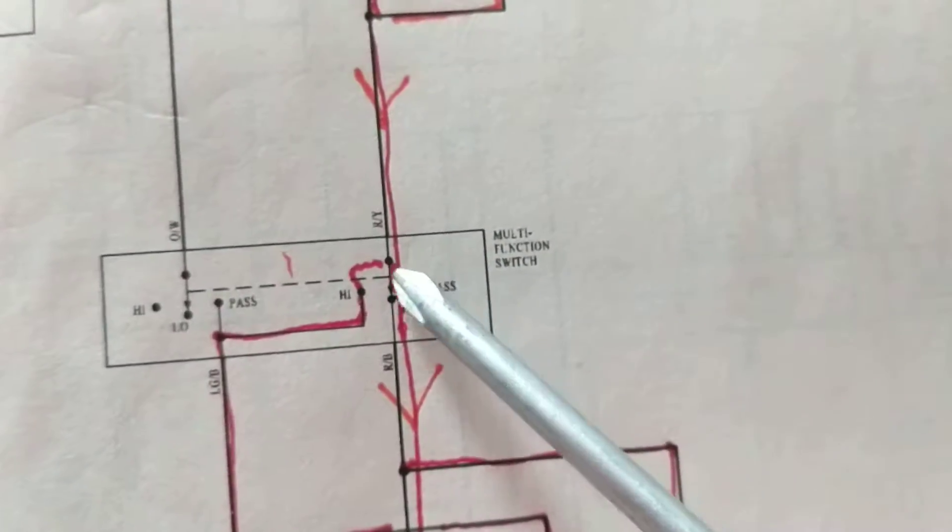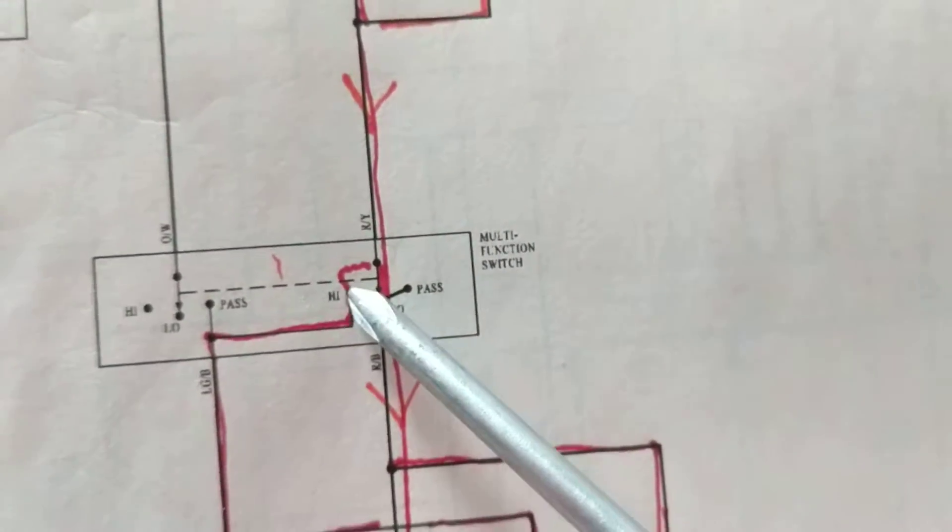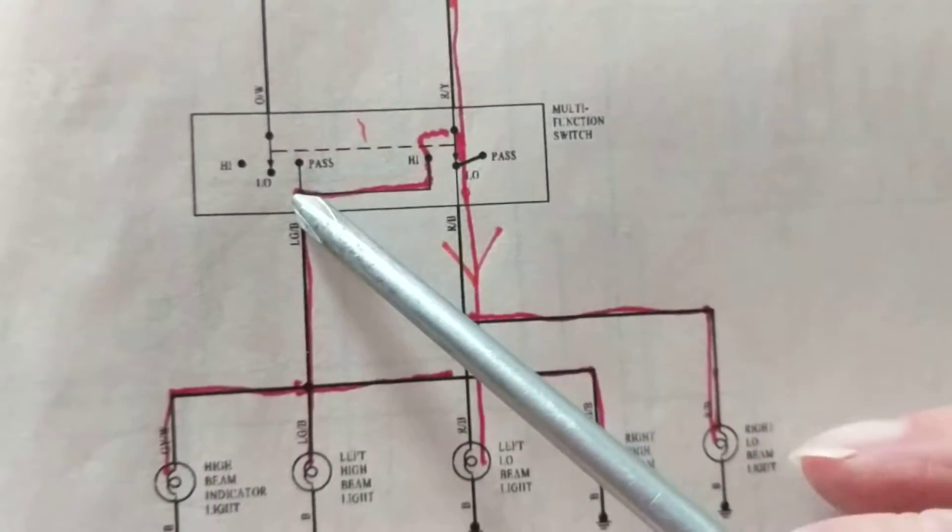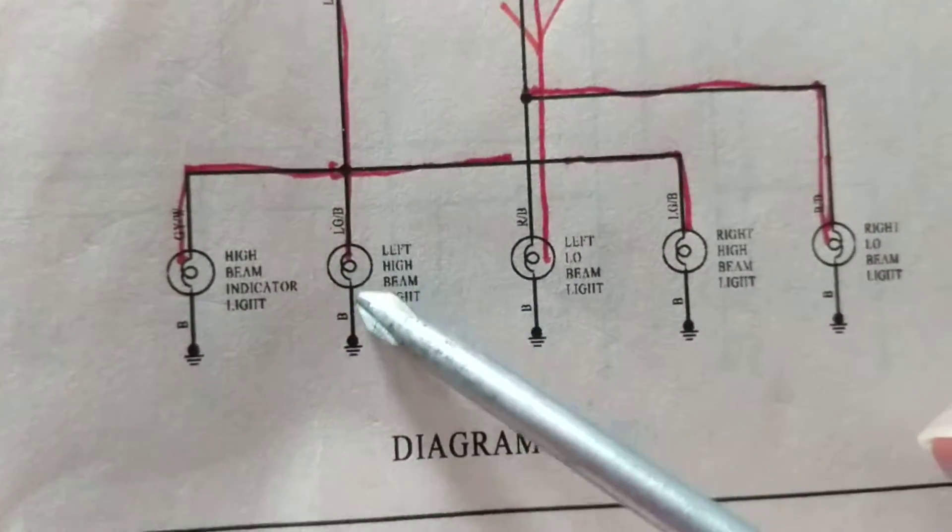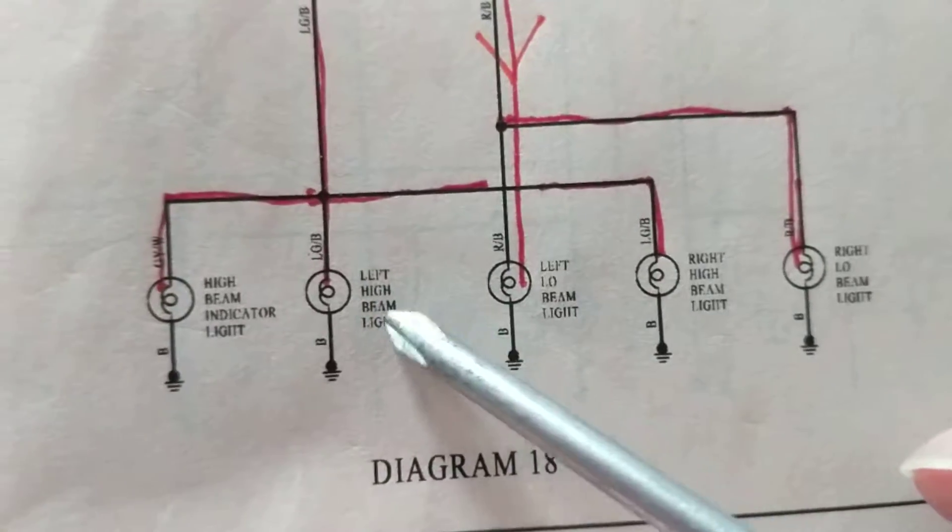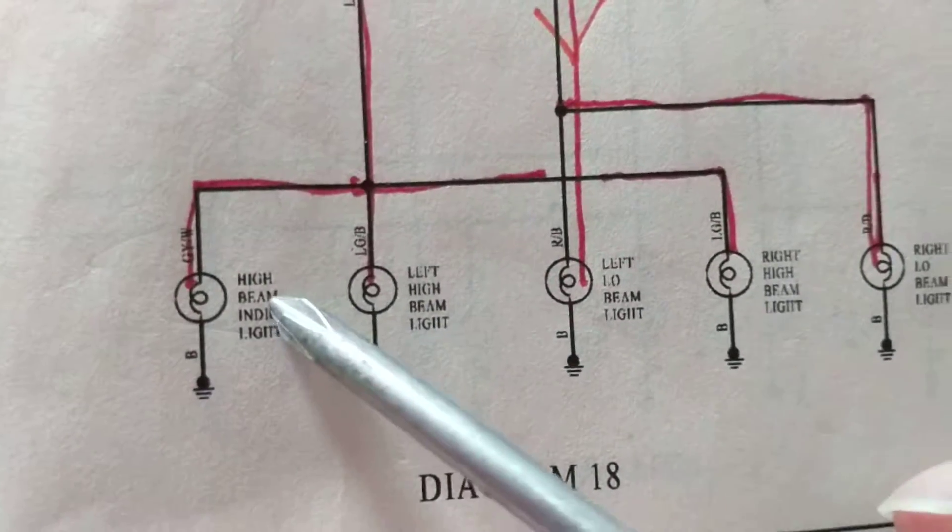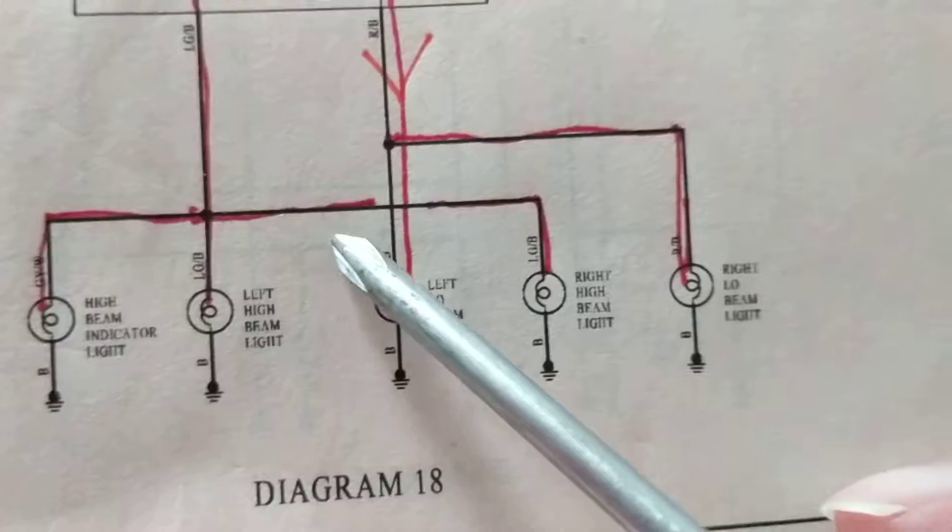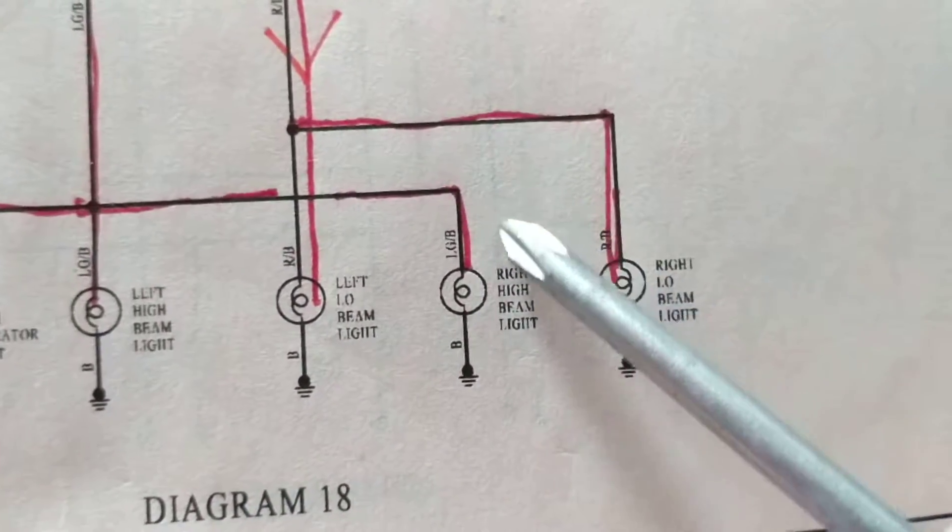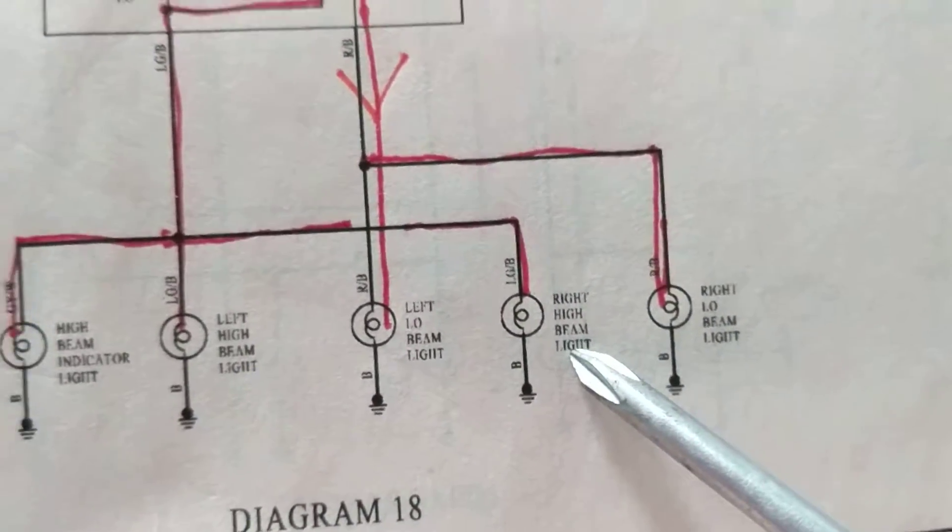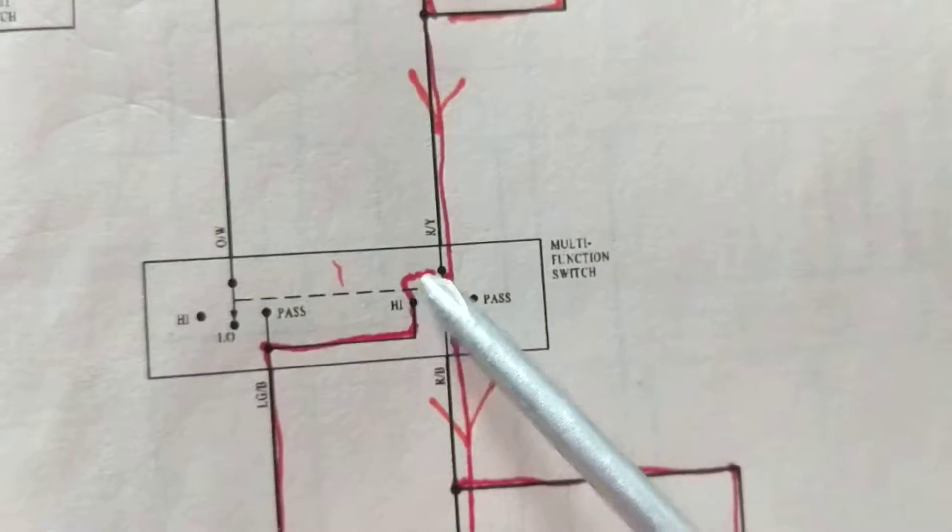And the same if we have this in a high position, multi-function switch, we will go here. These will be activated: left high beam switch, high beam indicator light, right high beam from this switch in this position.